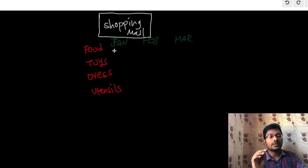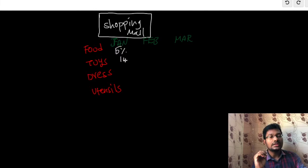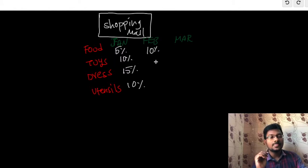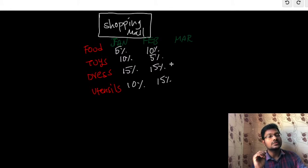For January, the country decides 5% tax for food products, 10% for toys, 15% for dress, and 10% for utensils. For February month, the tax percentage varies — the government decides 10% for food, 5% for toys, 15% for dress, and 15% for utensils.